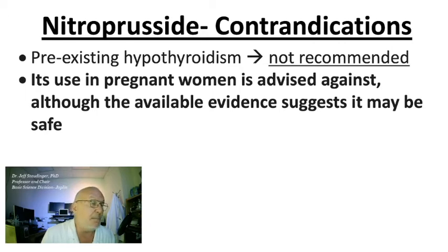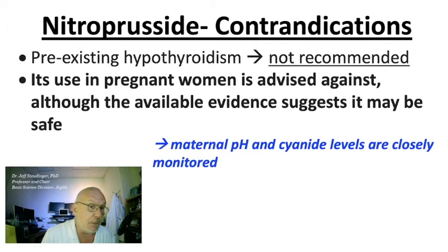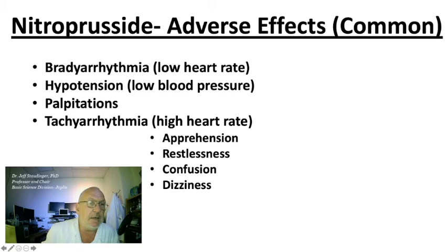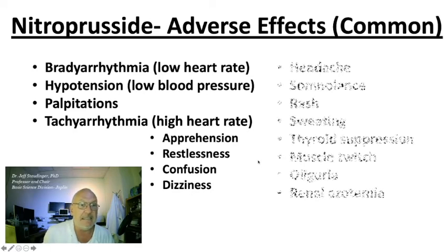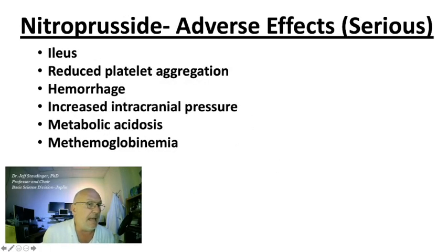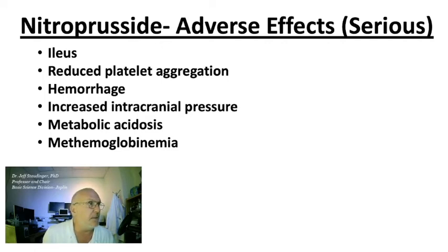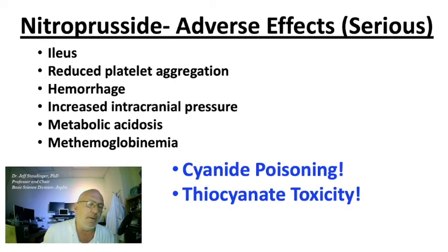There are many adverse effects. Common ones include bradyarrhythmia, hypotension, palpitations, tachyarrhythmia, apprehension, restlessness, confusion, and dizziness. Additional adverse effects that are extremely serious include ileus, reduced platelet aggregation, hemorrhage, increased intracranial pressure, metabolic acidosis, and methemoglobinemia. We're going to focus on cyanide poisoning and thiocyanate toxicity that can result from the use of this drug.